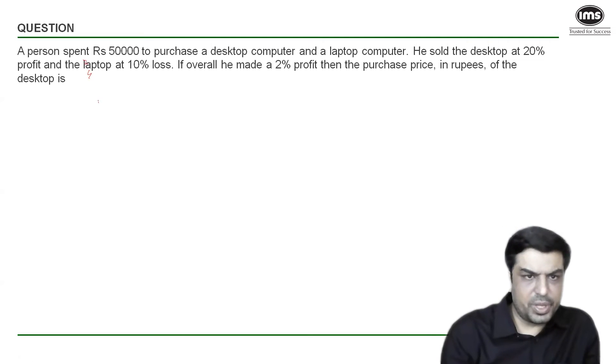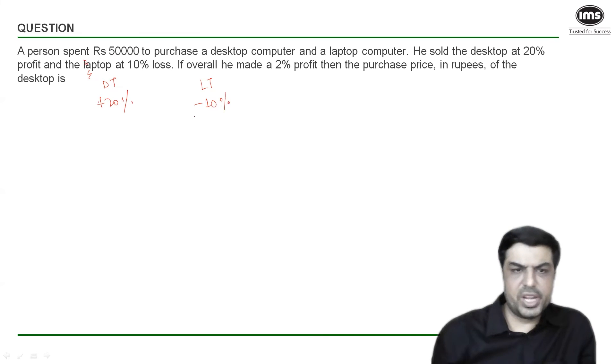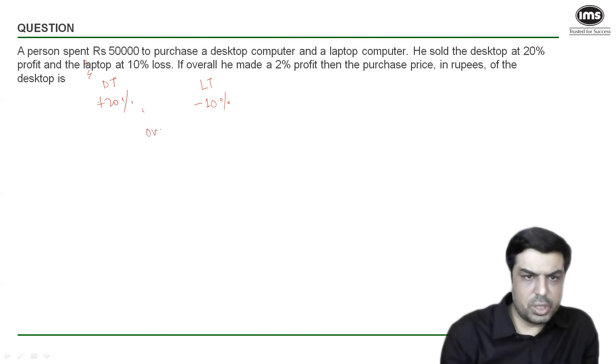The profit percentage on the desktop is given as plus 20%, plus because it is profit. The loss percentage on laptop, which is my lower value here, is also given. That is minus 10%. Be careful with the minus sign because this is loss. And the overall profit percentage is also given to us, and that is plus 2%, again because it is profit. All three values are known.